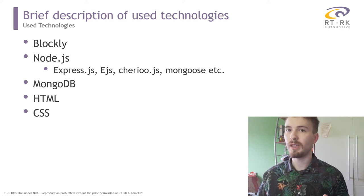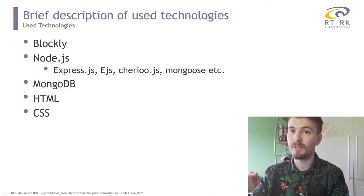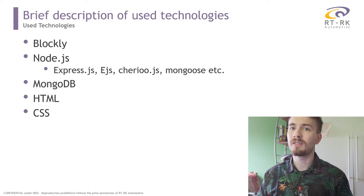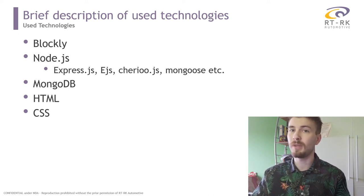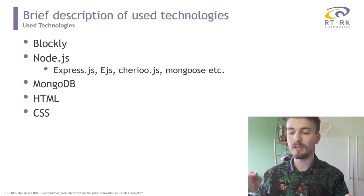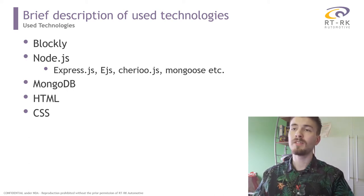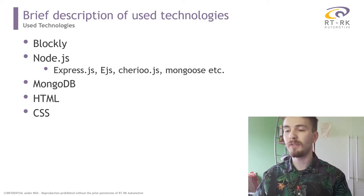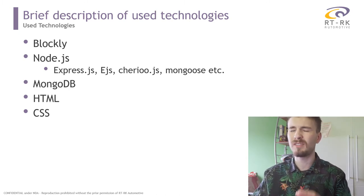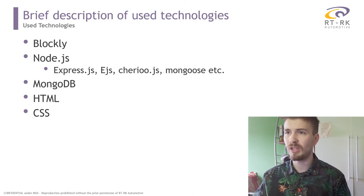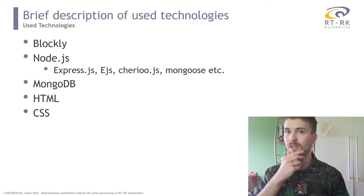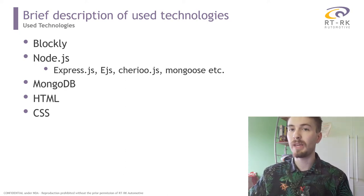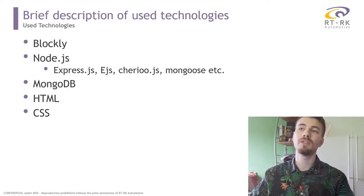I used Node.js, which is an environment for creating a web server. This was important because Blockly is a web technology and I needed a way to connect it to the database — MongoDB. The web server is the glue that connects those two. For Node.js, I used many modules including Express.js, EJS, Cheerio, Mongoose, and similar modules via NPM to handle different functionalities.